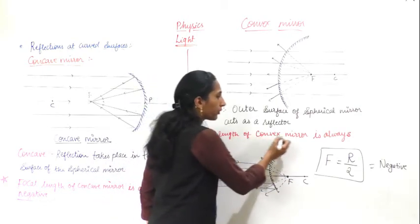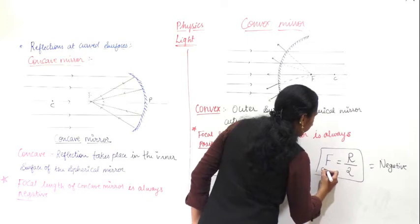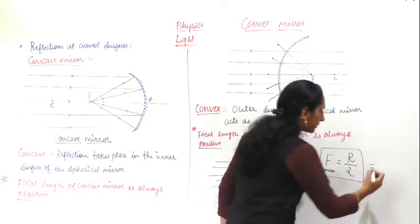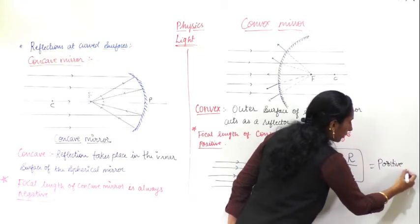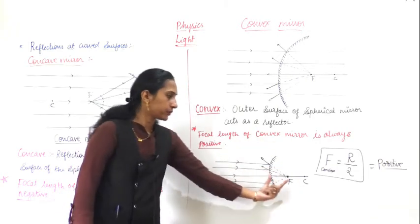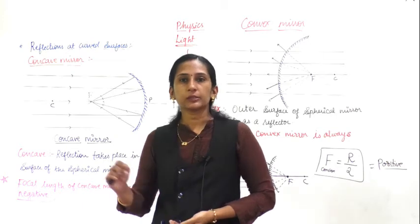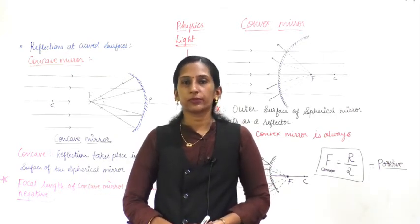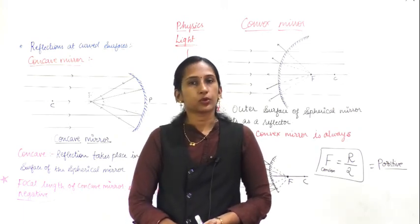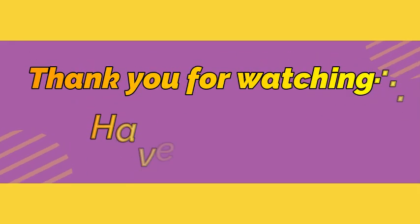The focal length of a convex mirror is always positive. The formula for a convex mirror is f equals R divided by 2, the same as before, but the answer is always positive. If you solve this, the answer should always be positive because the focal length of a convex mirror is always positive. This was the topic - if you have any doubt you can ask me. This part is very important, so listen carefully as it will help you in further classes. Please try to understand this concept. Thank you.